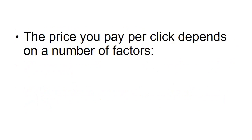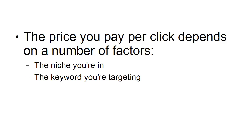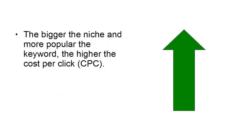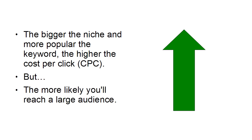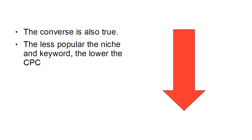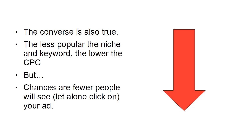The price you're going to pay for each click depends on a number of different factors: the niche that you're in, the keyword that you're targeting, and how many other marketers are targeting that niche or keyword. The bigger the niche and the more popular the keyword, the higher the cost per click, otherwise known as CPC — but the more likely you're going to be able to reach a large audience. Conversely, the less popular the niche and keyword, the lower the CPC, but chances are fewer people will see your ad, let alone click on it.